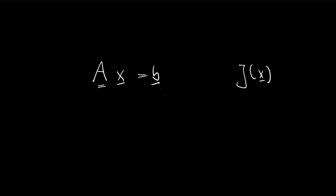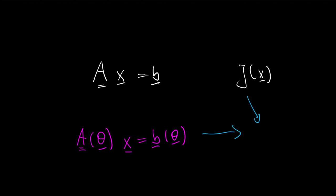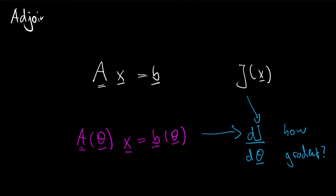Now, your system matrix and the right-hand side depend on some parameters — let's call this theta, a theta vector. So you have A(theta) times x equals B(theta). It would be interesting to know how this loss function changes with respect to theta, which is the gradient of J with respect to the theta vector. This can be used in gradient-based optimization to tune the parameters or to look at local sensitivities. The question is how we can obtain the gradient, and one particularly efficient method is called the adjoint — the adjoint of a linear system of equations.